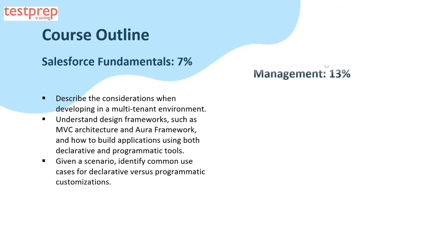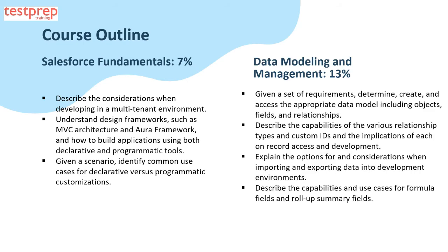Domain 2 is Data Modeling and Management, which comprises 13% weightage in the exam. This covers four areas: given a set of requirements, determine, create, and access the appropriate data model including objects, fields, and relationships; describe the capabilities of the various relationship types and custom IDs and the implications of each on record access and development; explain the options for and considerations when importing and exporting data into development environments; and describe the capabilities and use cases for formula fields and roll-up summary fields.